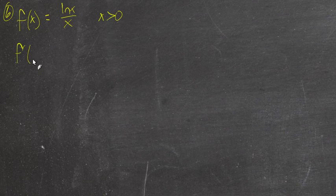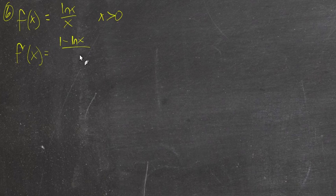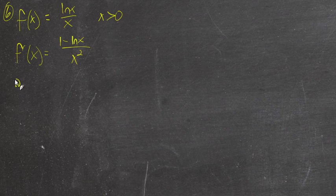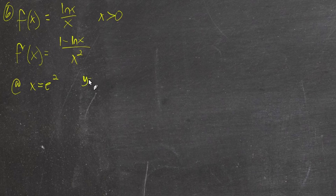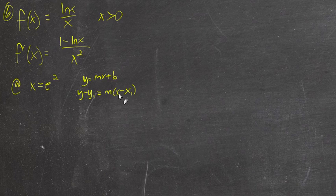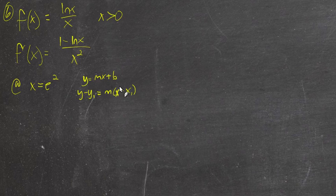So let's say f(x) is equal to the natural log of x over x for all x greater than 0. The derivative of f is already given, so they don't really care if we know how to find the derivative on this problem. Write an equation for the tangent line of the graph of f at x equals e squared. Remember that we can use y = mx + b, or y minus y1 equals m times x minus x1 — the point-slope form.